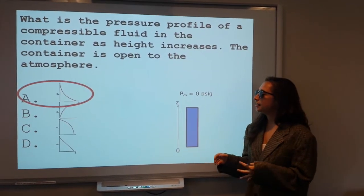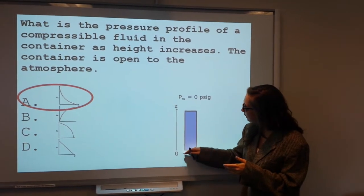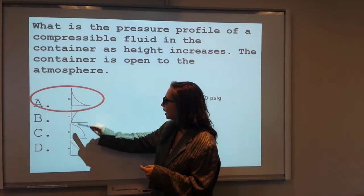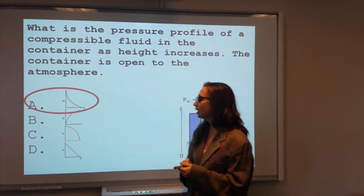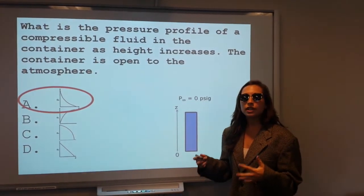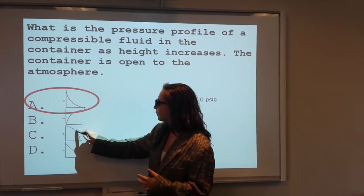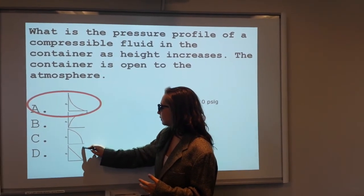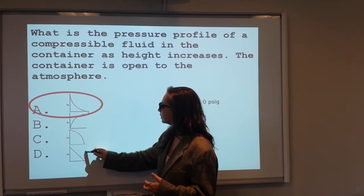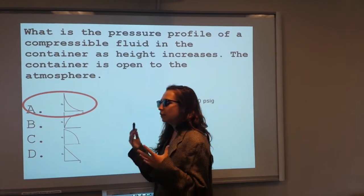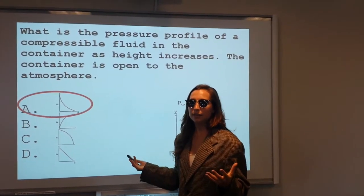We know that pressure is highest at the ground level where the molecules are most densely packed. So we know that leaves either A or C. We also know that pressure cannot be negative. So as you can see in choice C, this function is going down towards the negative range and crosses the x-intercept, which leaves us with A, which is an exponential function and will never actually cross the x-intercept.